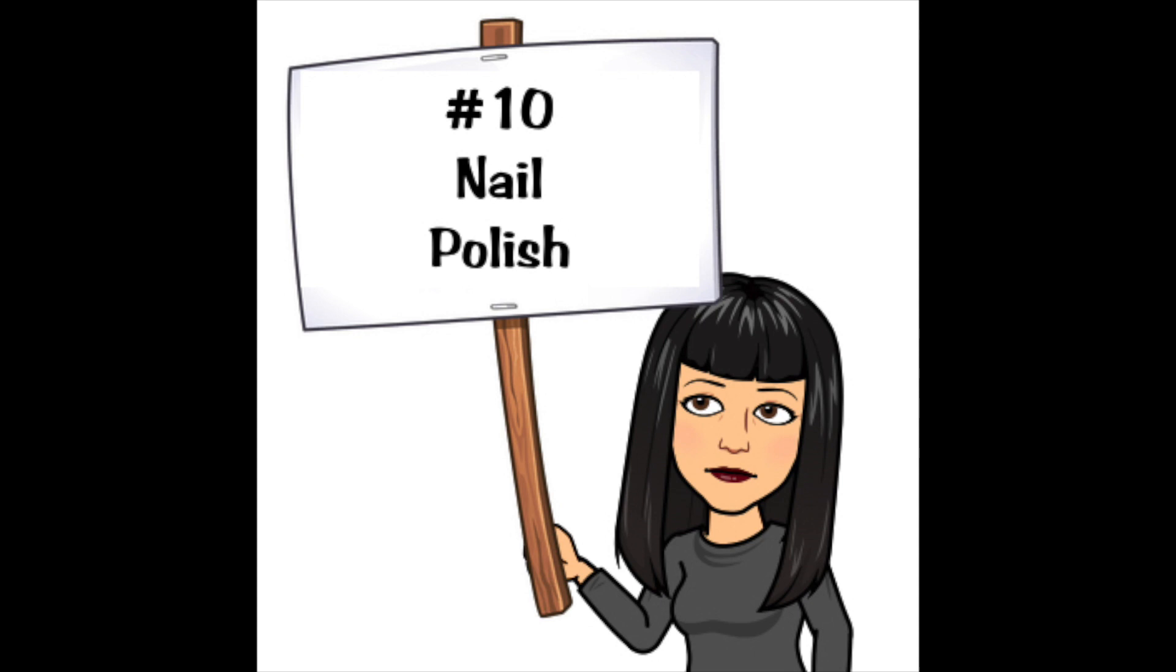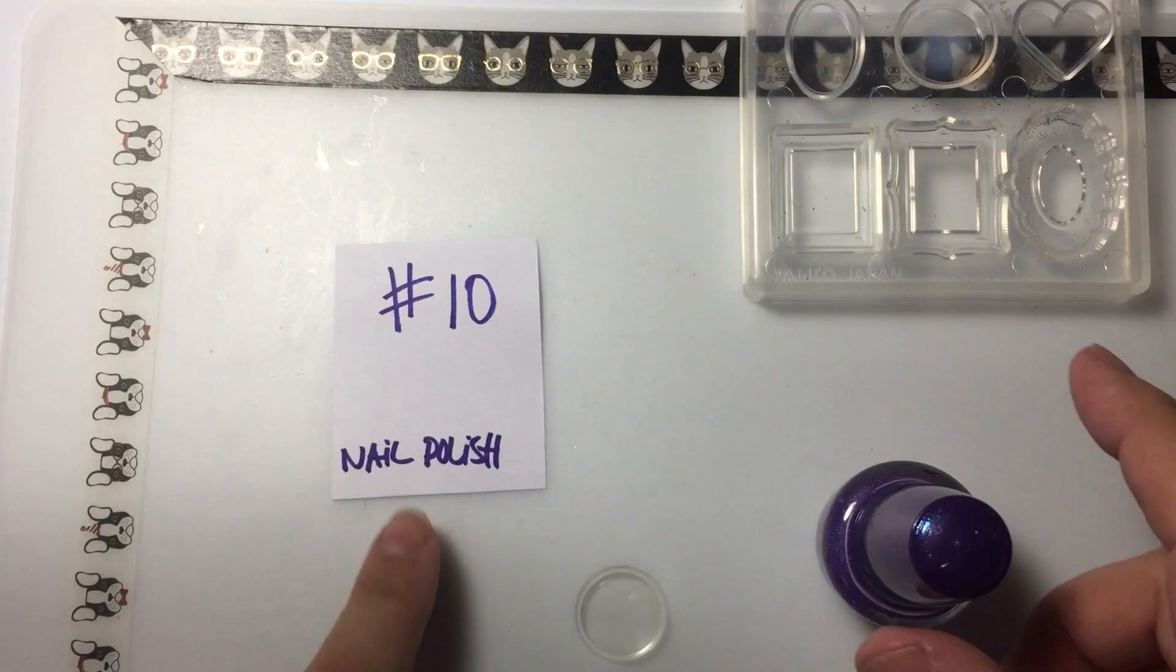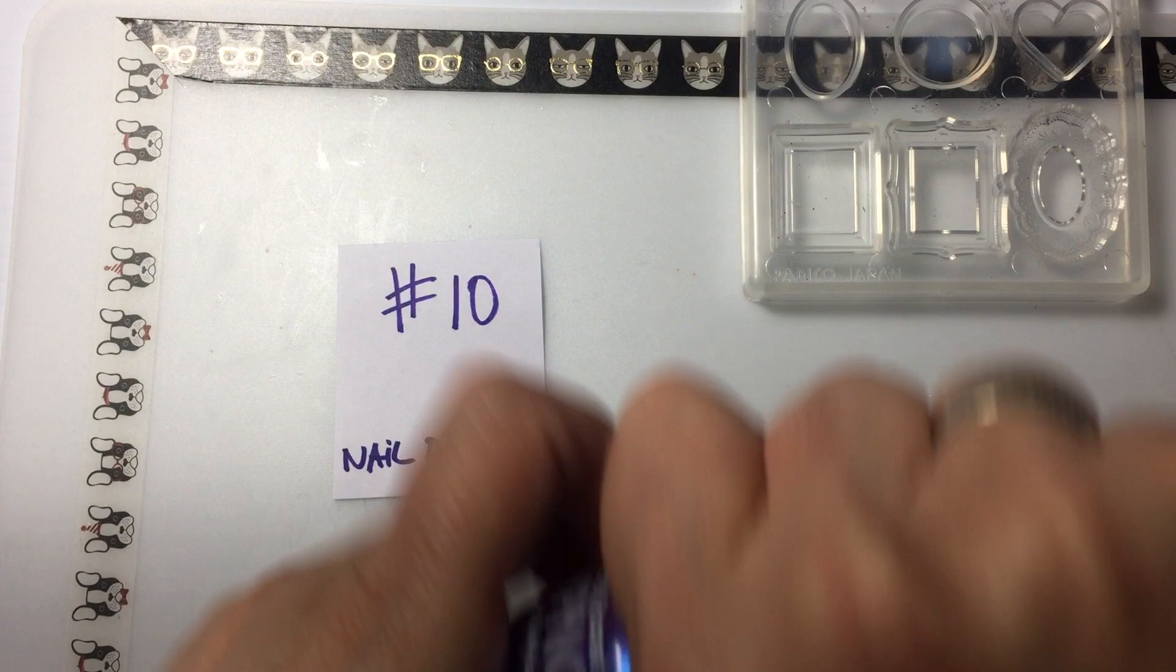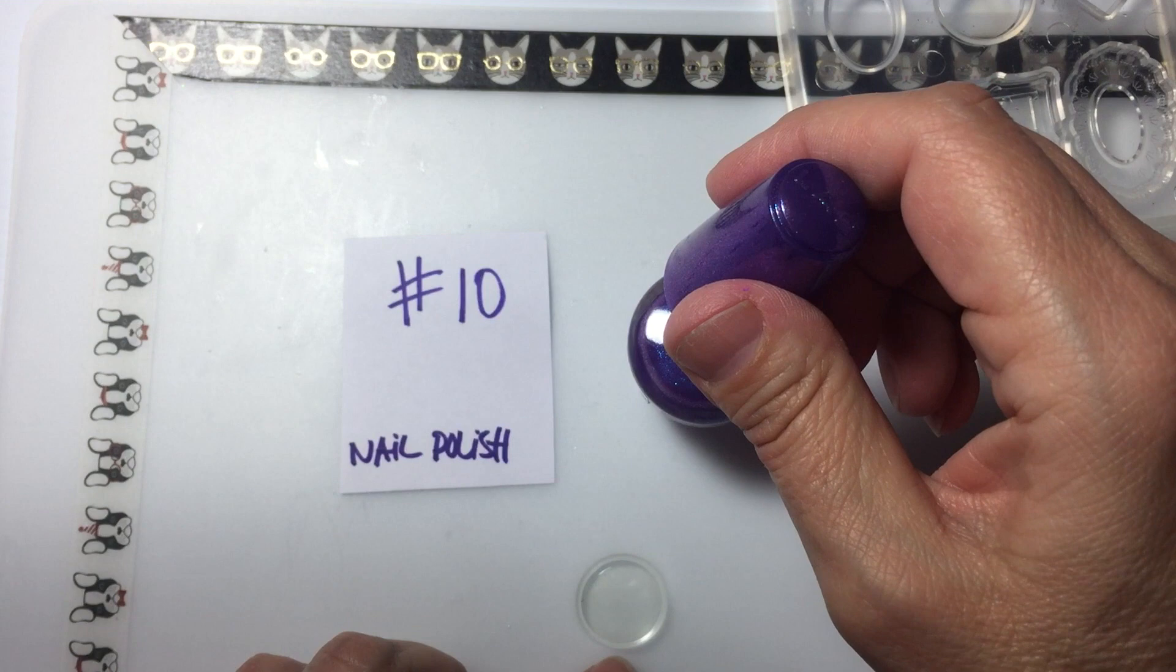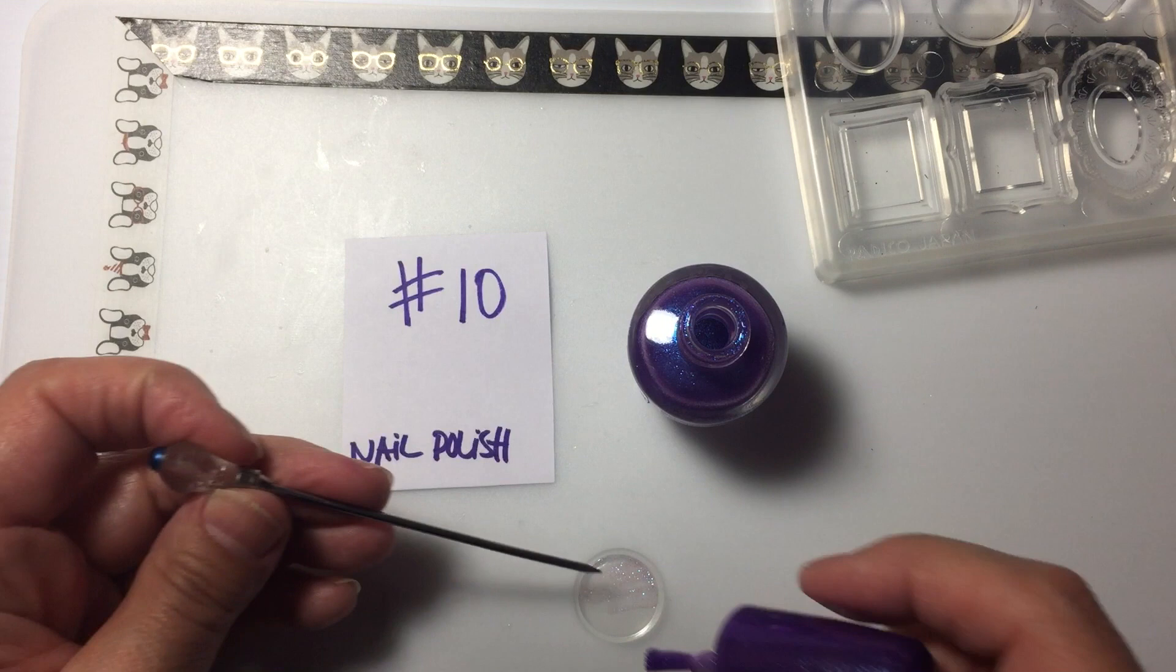The tenth way to color resin is to use nail polish. Just like with the paint markers, I made a clear disc first and then I had to do several coats but I paint right on top of the disc. This was kind of a transparent nail polish. I would recommend more of an opaque color. You can also use UV nail polish.